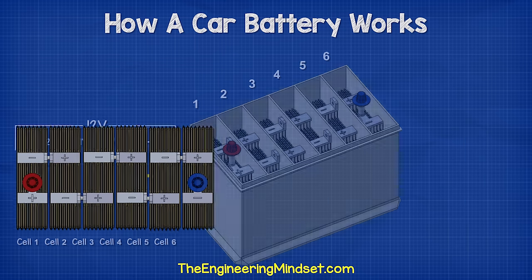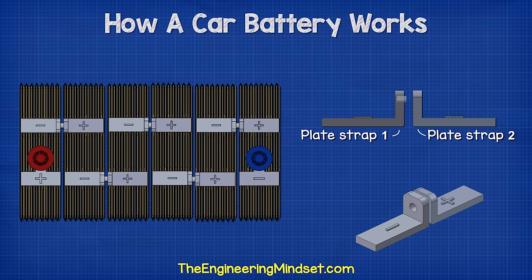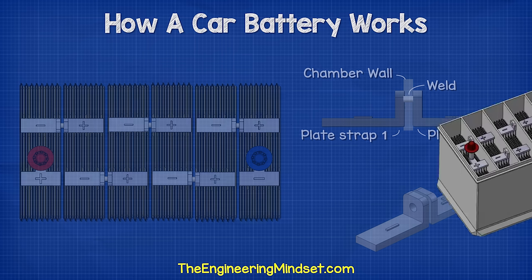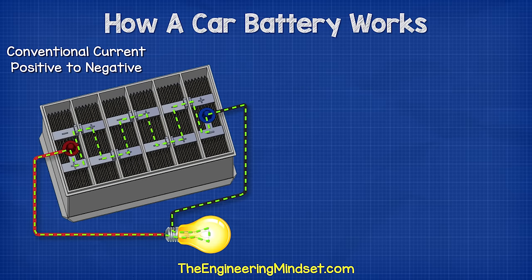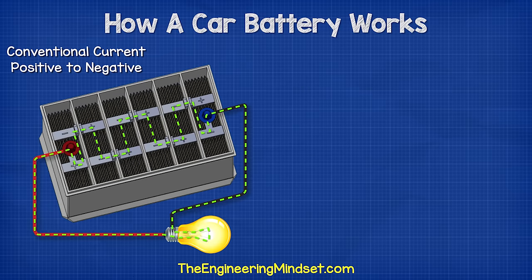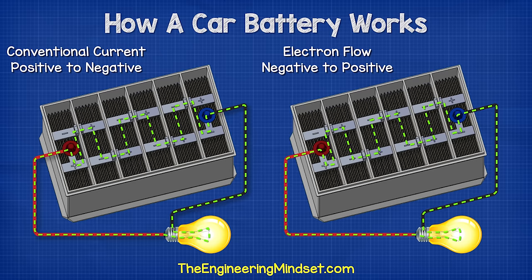Each cell in the battery is connected via a plate strap, which is made from lead. These straps are welded together through the plastic wall to form the connection. As we look at the battery from this view, we see that current flows through the battery cells from the positive to the negative — that's using conventional current theory.